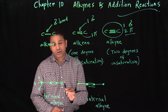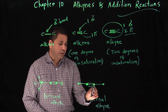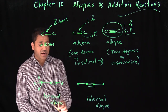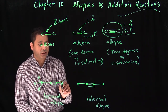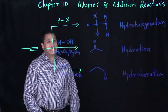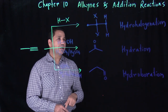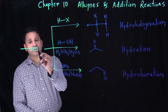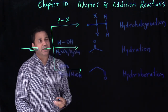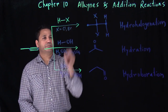To summarize: the carbon-carbon triple bond is between the two carbons. For a terminal alkyne, there is also a hydrogen attached to carbon one. Alkynes have similar reactions to alkenes: addition of HX (hydrohalogenation), hydration with H2O and H2SO4, and hydroboration.